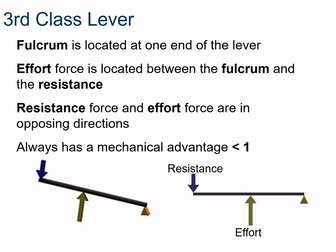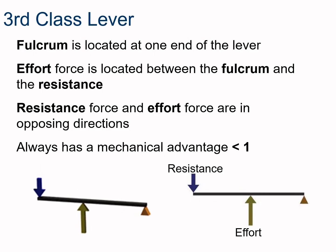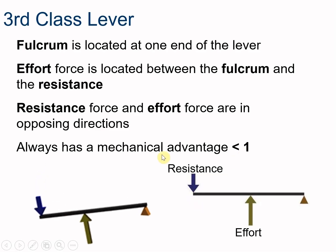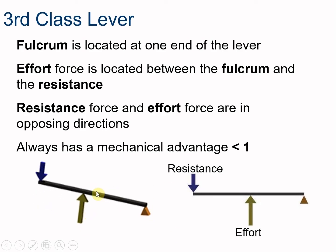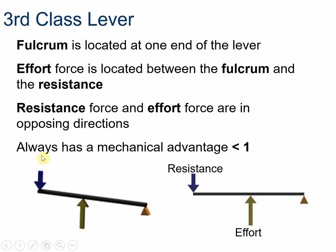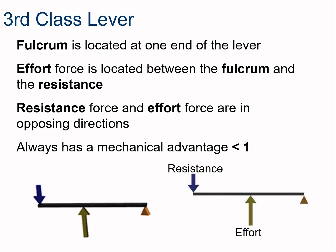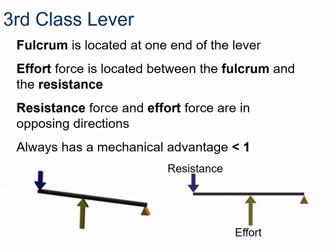The third class lever also has the fulcrum off to one side, but now the effort force is close to the fulcrum and the resistance force is far away. This gives a mechanical advantage of less than one. The advantage is speed and reach — when you sweep with a broom, you hold the handle and push with effort near the fulcrum, and the broom head travels a long distance. A baseball bat works the same way: a little input distance gives you a lot of output distance, making it very effective for sport.